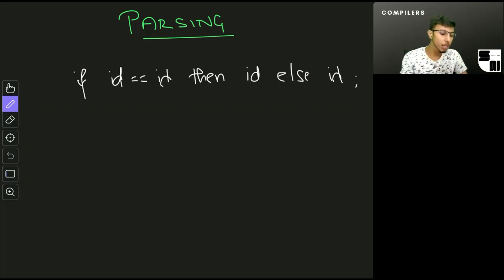The way a leftmost derivation works is that at every step we replace the leftmost non-terminal. If we were using the grammar that we discussed in the previous video, the way this derivation would go is something like this: starting with E we would have if E then E else E.